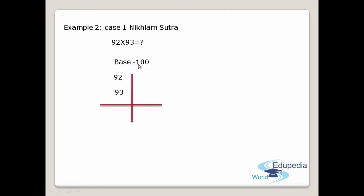Now see the numbers: 100 and 92 — 92 is 8 less than 100, so write minus 8. Check 93 — 93 is 7 less than the base, so write minus 7, because it is less. After writing minus 8 and minus 7, multiply 8 and 7. Minus 8 and minus 7 gives you 56. Write down that 56 in the below of the first column.